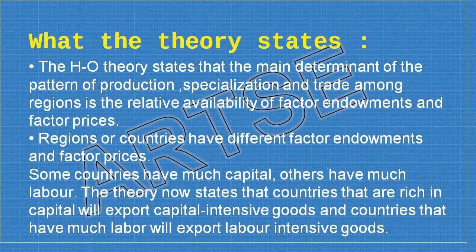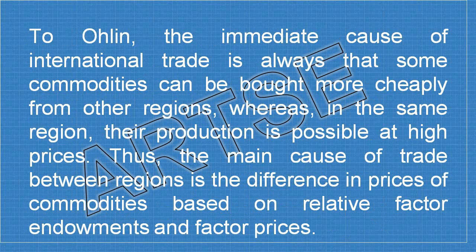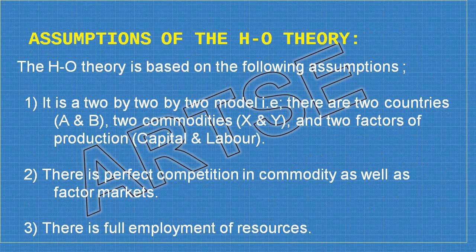The HO theory states that the main determinant of the pattern of production, specialization, and trade among regions is the relative availability of factor endowments and factor prices. Countries have different factor endowments and factor prices — some countries have much capital, others have much labor. Countries rich in capital will export capital-intensive goods, and countries with much labor will export labor-intensive goods. The main cause of trade between regions is the difference in prices of commodities based on relative factor endowments and factor prices.